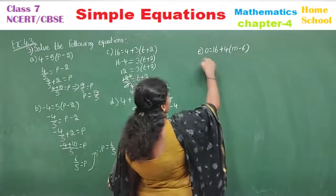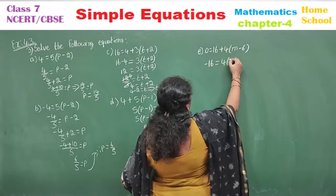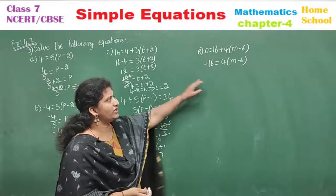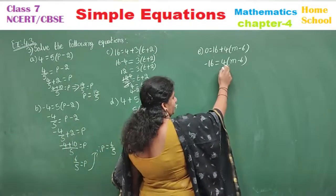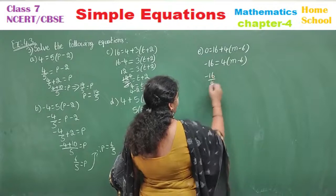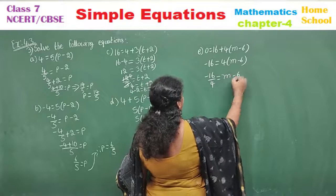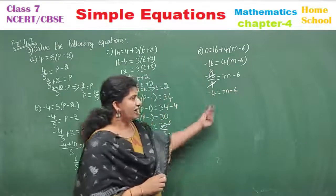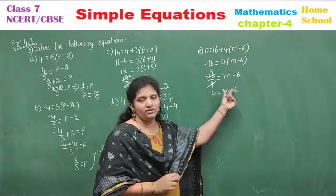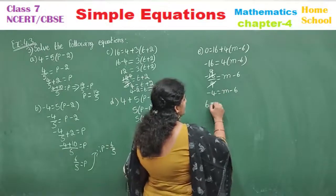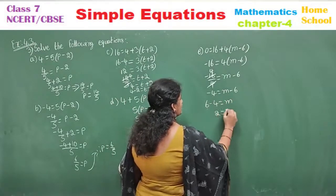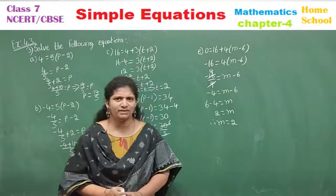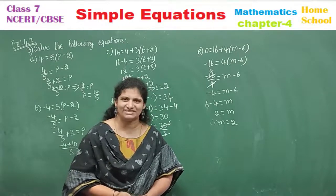Next sub-question (e): 0 is equal to 16 plus 4 into (m minus 6). Send 16 to the other side: minus 16 equals 4 into (m minus 6). The multiple 4 goes to the other side as divisor: minus 16 by 4 is minus 4, so m minus 6 equals minus 4. Transpose minus 6 to get plus 6: m equals 2. Simplification of these equations is very simple, but try to practice more — then only it will be easy for you.